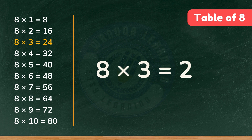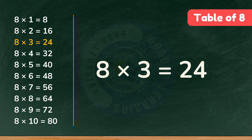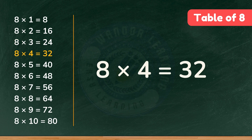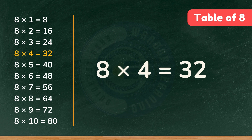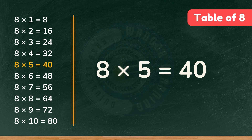Eight times three is twenty-four. Eight times three is twenty-four. Eight times four is thirty-two. Eight times four is thirty-two. Eight times five is forty. Eight times five is forty.